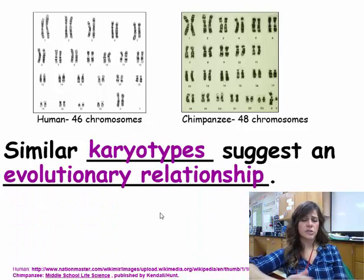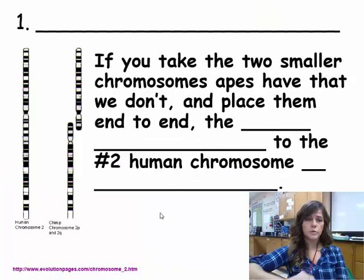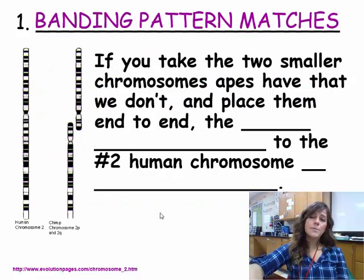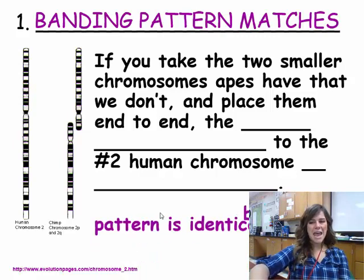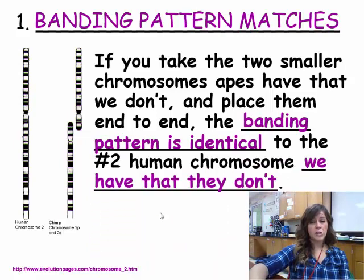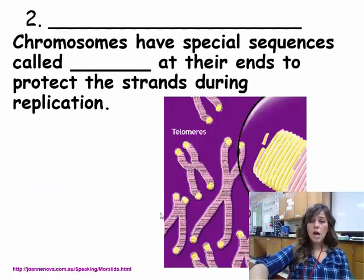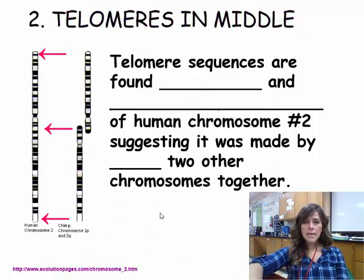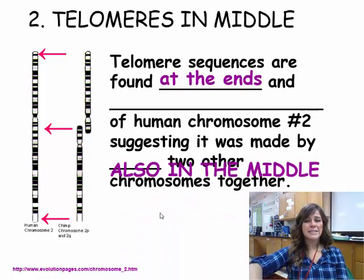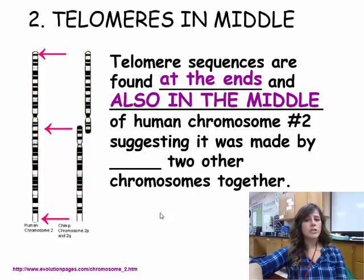We also see similar karyotypes that suggest an evolutionary relationship. Humans have 46 chromosomes and chimpanzees have 48. When we look at their karyotypes, the banding patterns match. If you take the two smaller chromosomes apes have that we don't and place them end to end, the banding pattern is identical to the number two chromosome humans have. Telomere sequences are found at the ends and also in the middles of human chromosome number two, suggesting it was once made by the fusing of two chromosomes together.